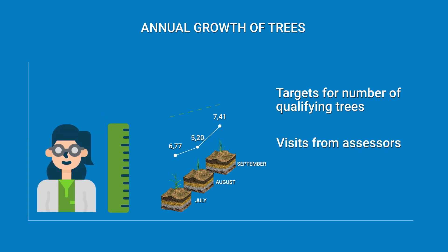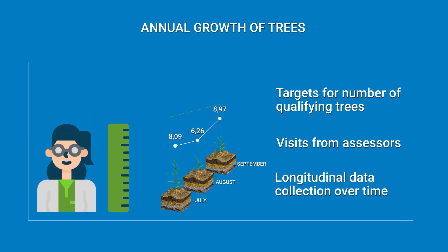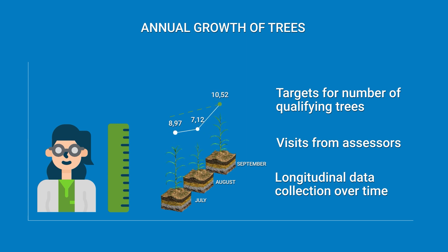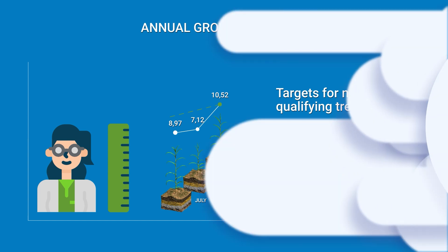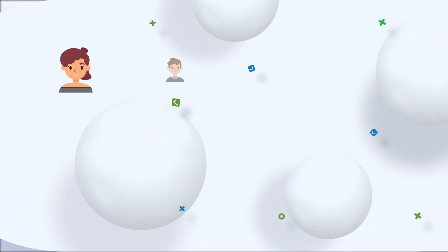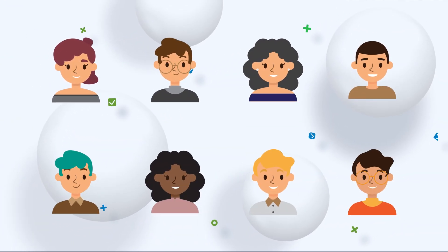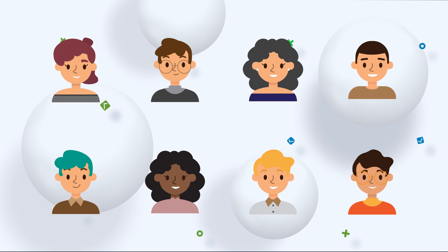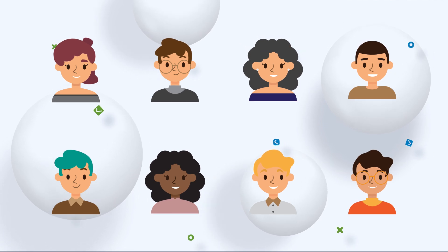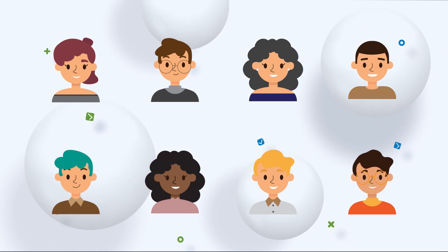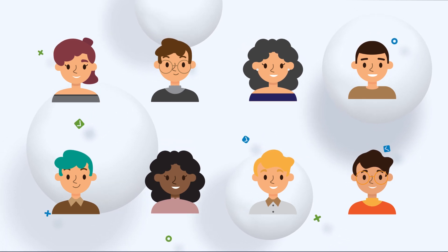To accomplish this data collection goal, you'll have 100 enumerators visit the farmers at several time points over the program's duration to measure the trees as they grow. Before your enumerators can visit the farmers, you need to onboard them to this project and create data quality and security safeguards, which can be challenging.